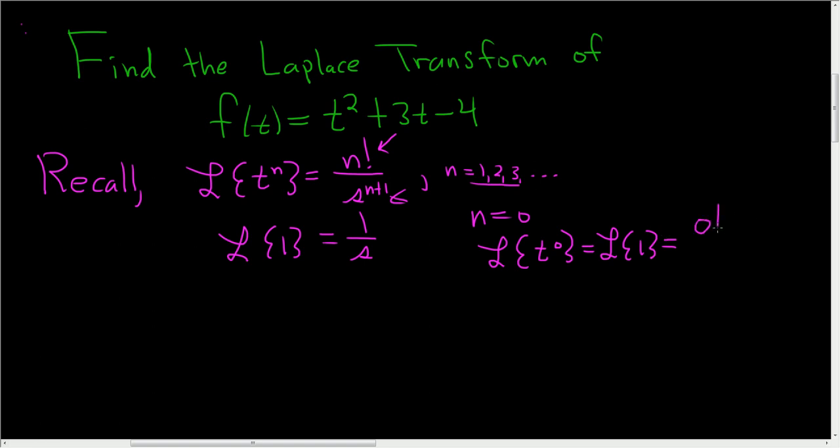0 factorial is 1, so you just get 1 over s. So it does work if n is equal to 0, but the Laplace transform of 1 just comes up so much that it's better to identify it separately.